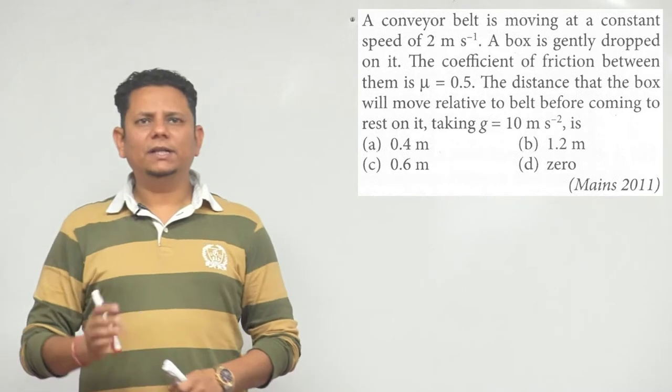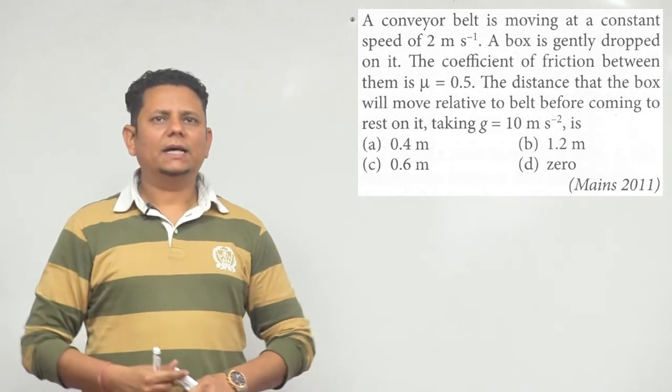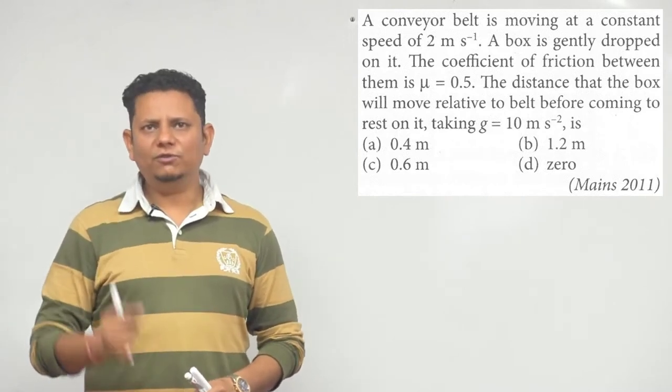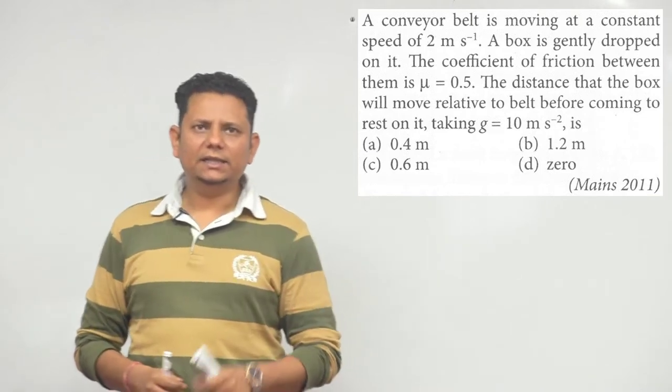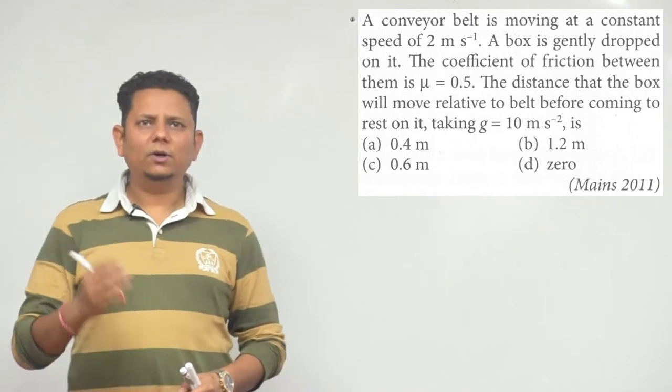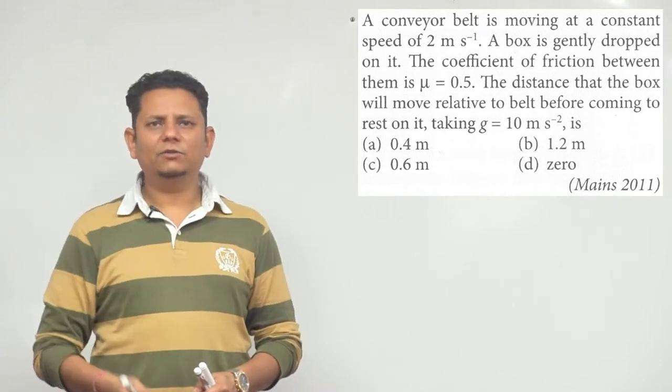The coefficient of friction between them is 0.5. We need to find the distance that the box will move relative to the belt before coming to rest on it. Take g equals 10 m/s². The options are 0.4, 0.6, 0, or 1.2 meter.